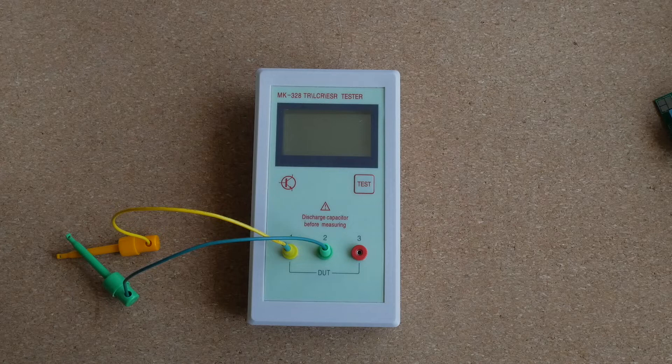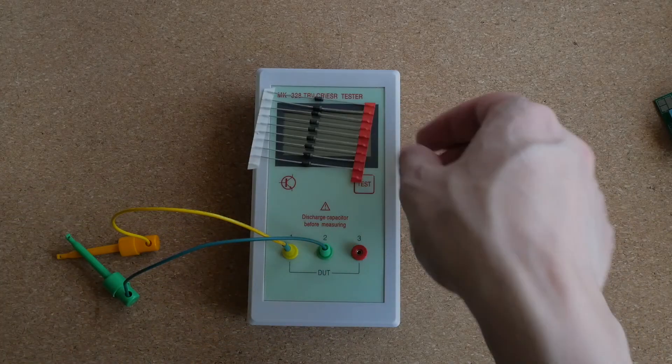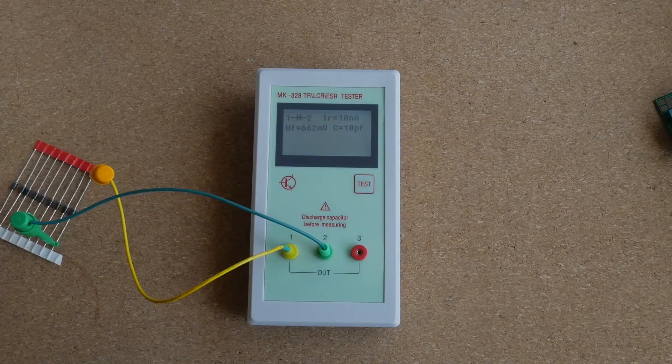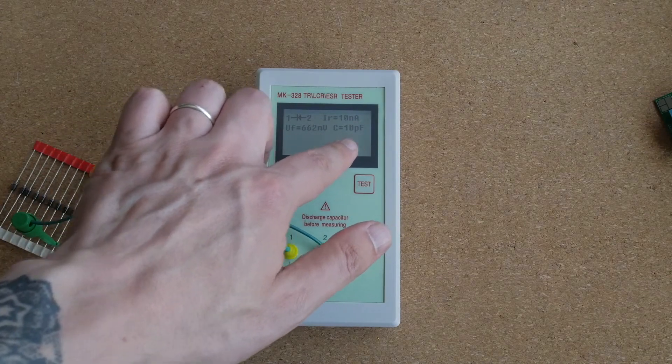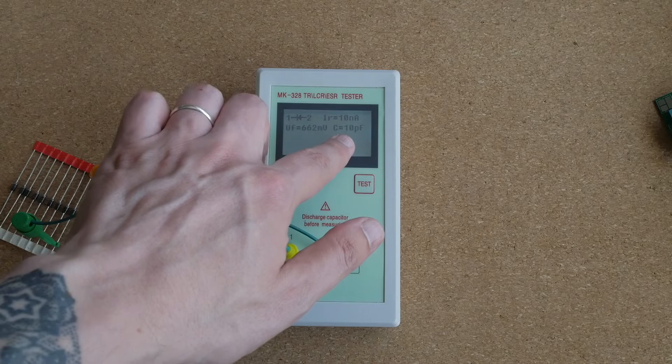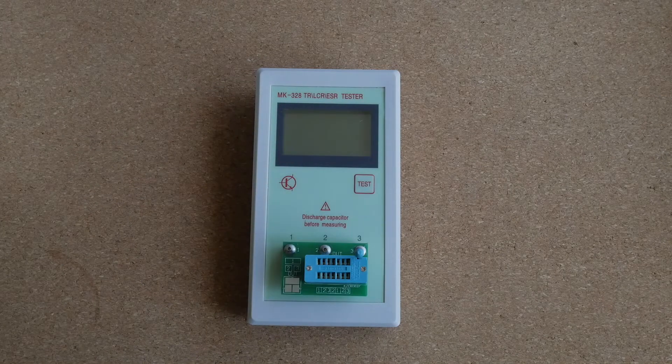Now let's move to semiconductors. Here I have some silicon diodes. As you can see it shows voltage drop and the capacitance of the PN junction. Now let's test the transistor.